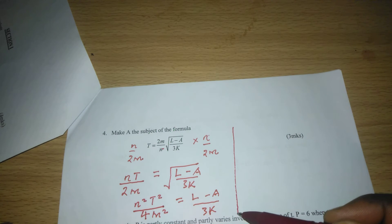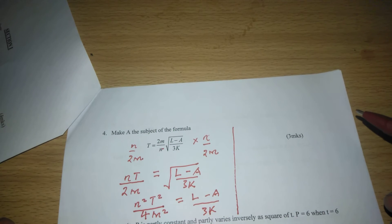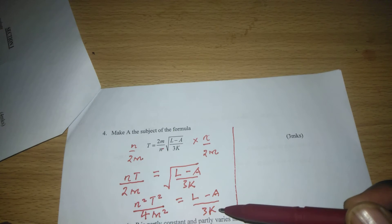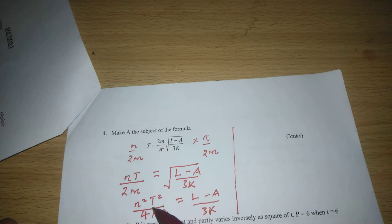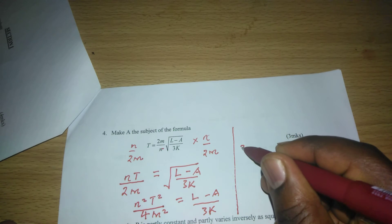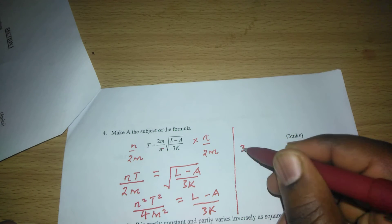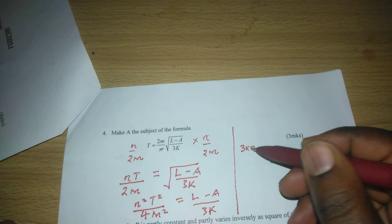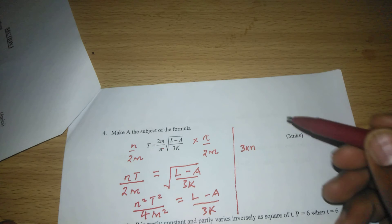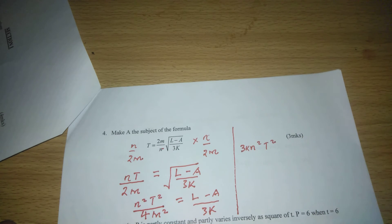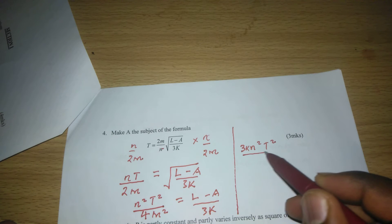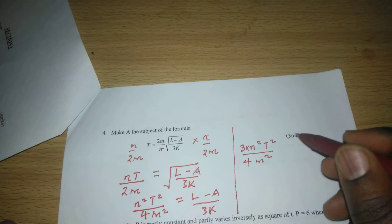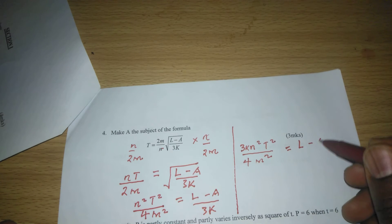Now we can multiply through with 3K so that the denominator is done away with. Multiplying with 3K, we will get 3K n squared t squared divided by 4m squared. This equals to L minus A.